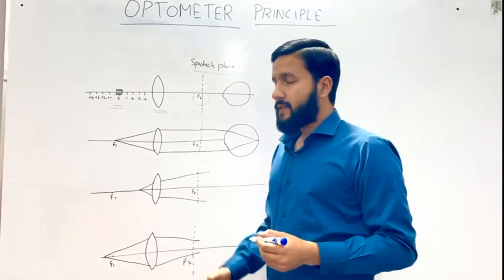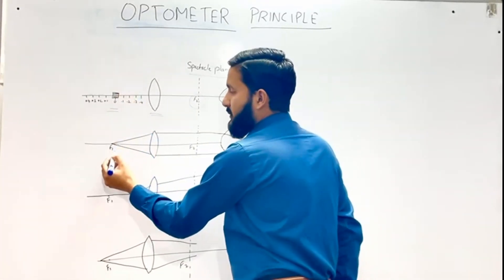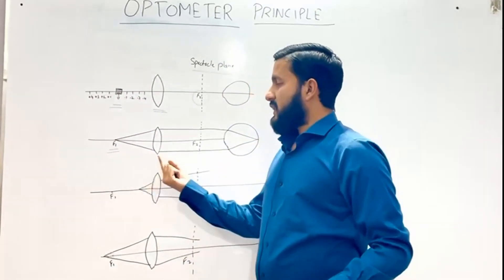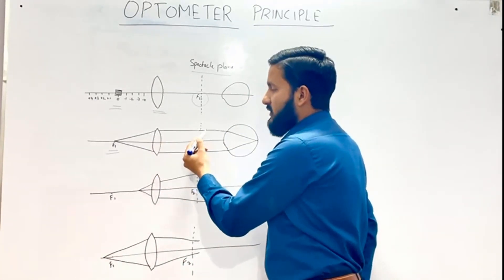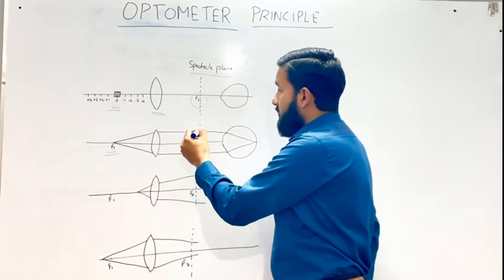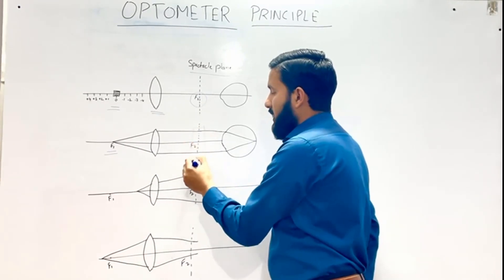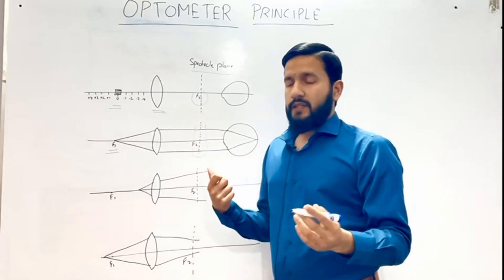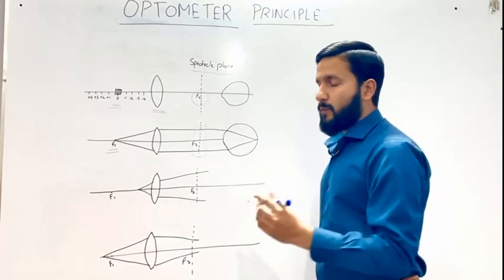We have three cases. In the first case, if the target is at the first principal focus of the convex lens, the light rays emerging from the lens will be parallel. At the spectacle plane they will again be parallel, entering the eye and focused on the retina — this is the case of emmetropia.